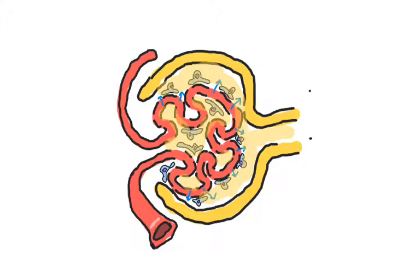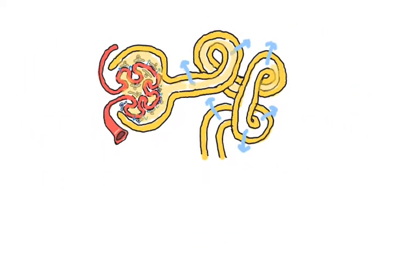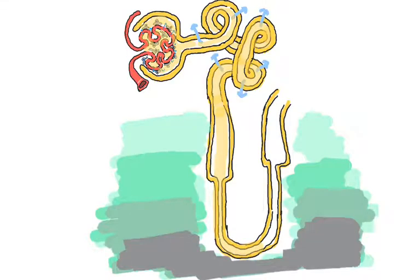The filtrate will travel to the proximal convoluted tubule next, where about 70% of the electrolytes and nutrients will be reabsorbed. Next, the filtrate will travel to the loop of Henle. As filtrate travels deeper in the kidney, it encounters regions of higher solute concentration. Aquaporins in the descending limb allow water to be reabsorbed down its concentration gradient. This will concentrate the filtrate.